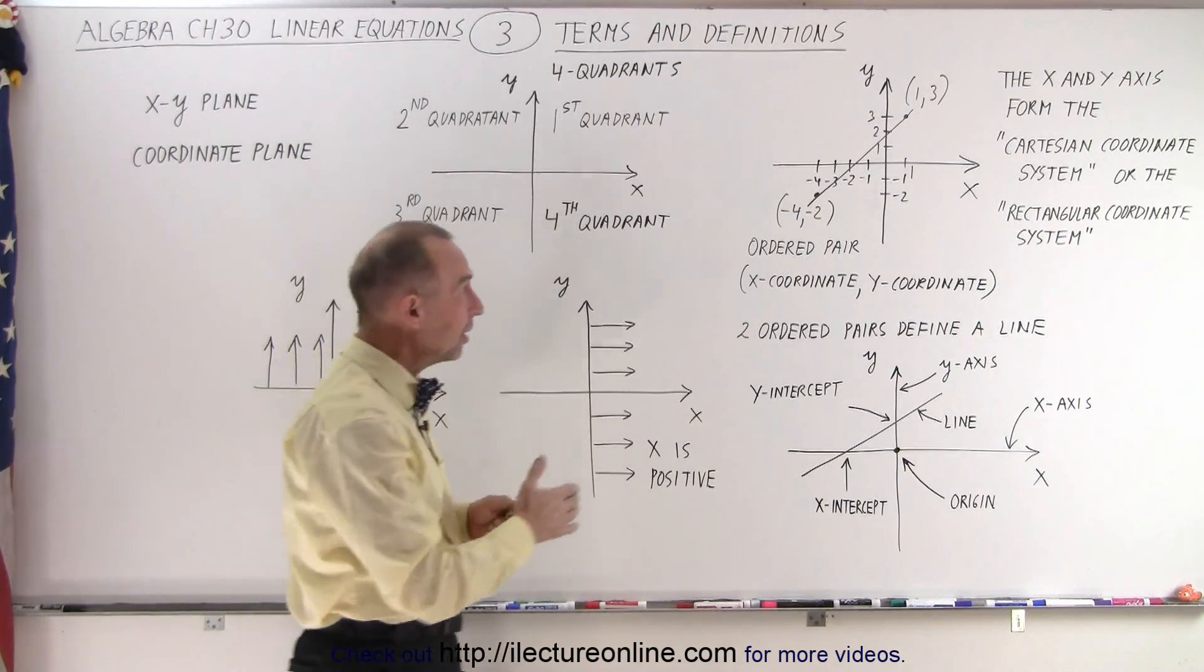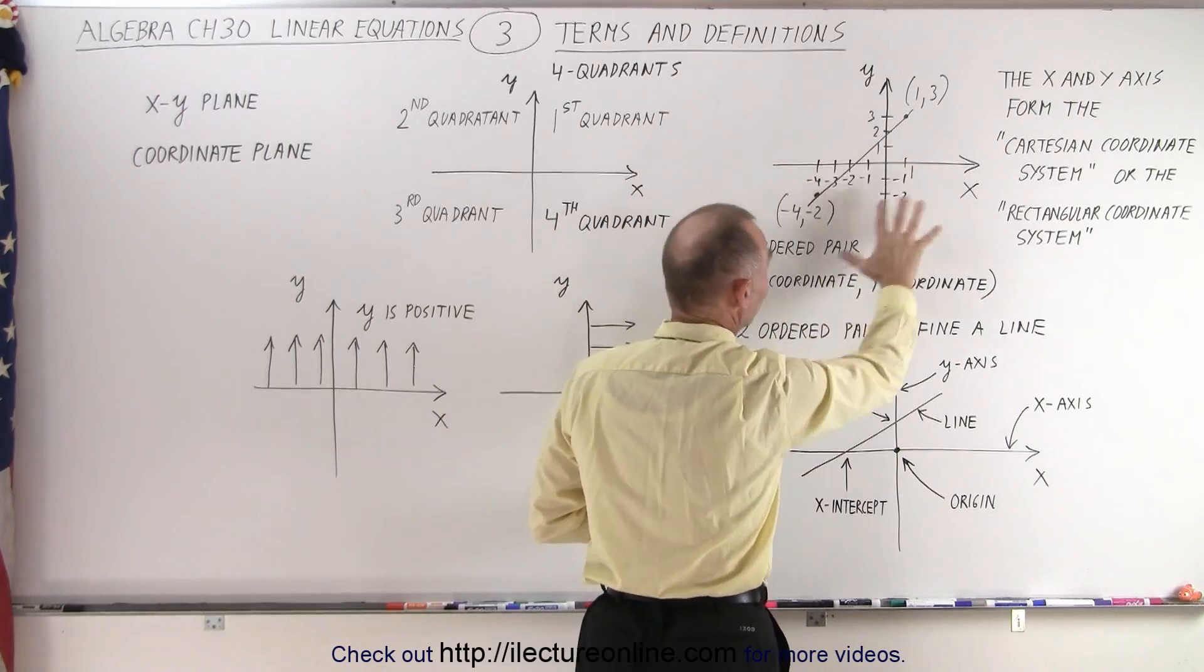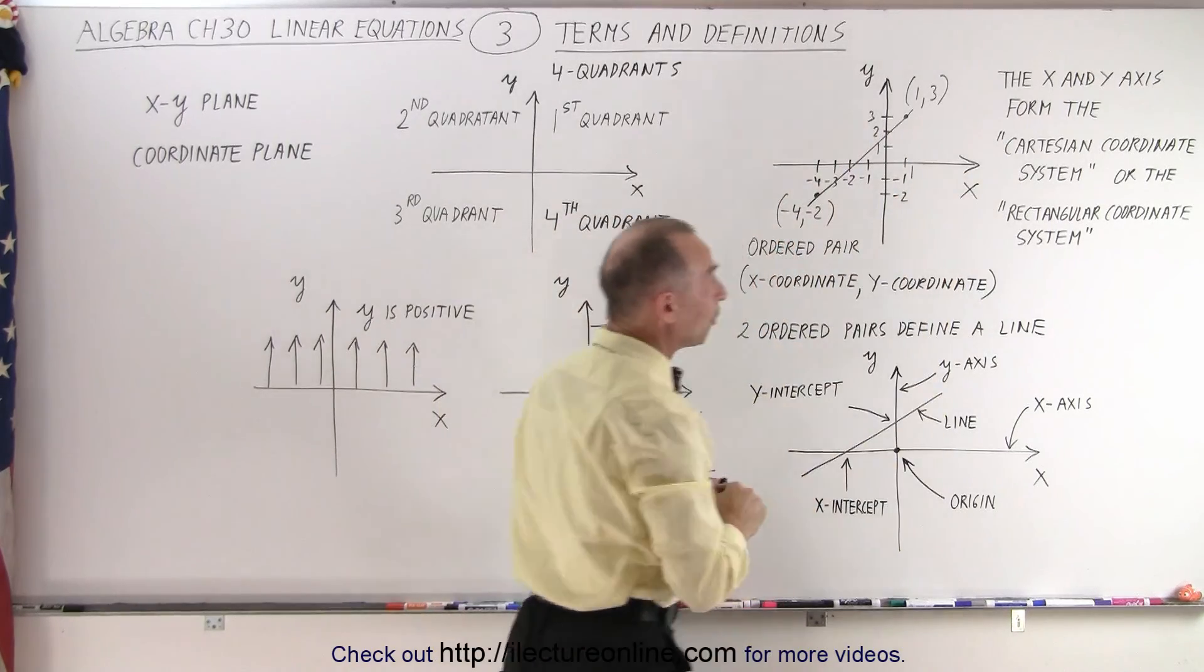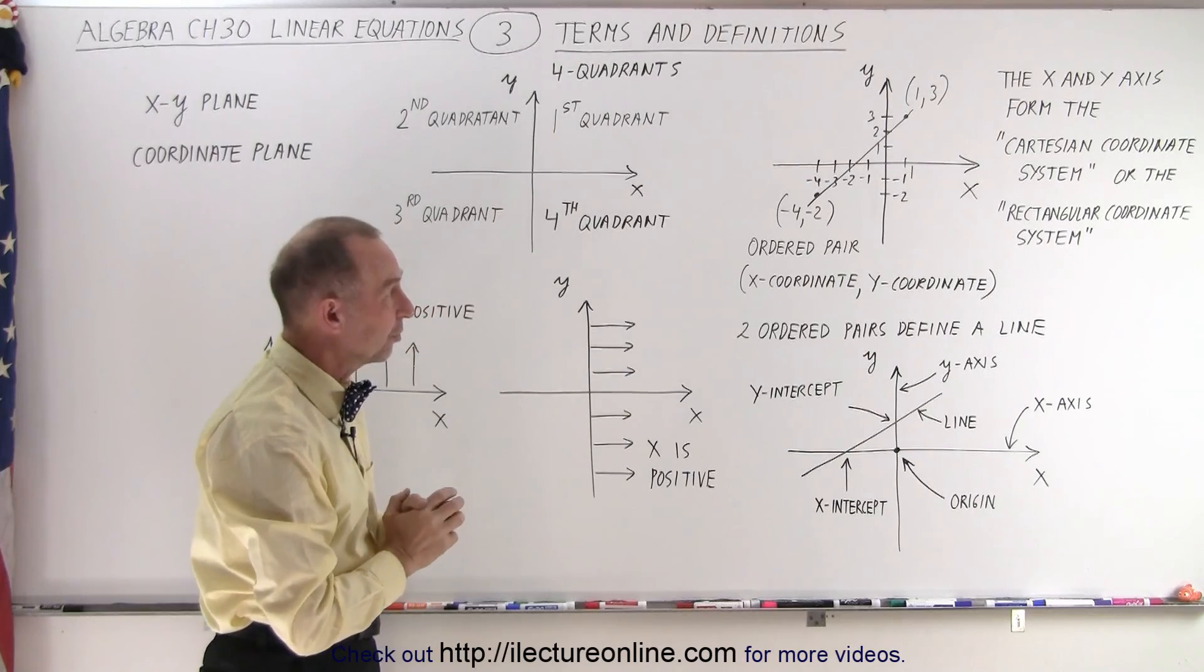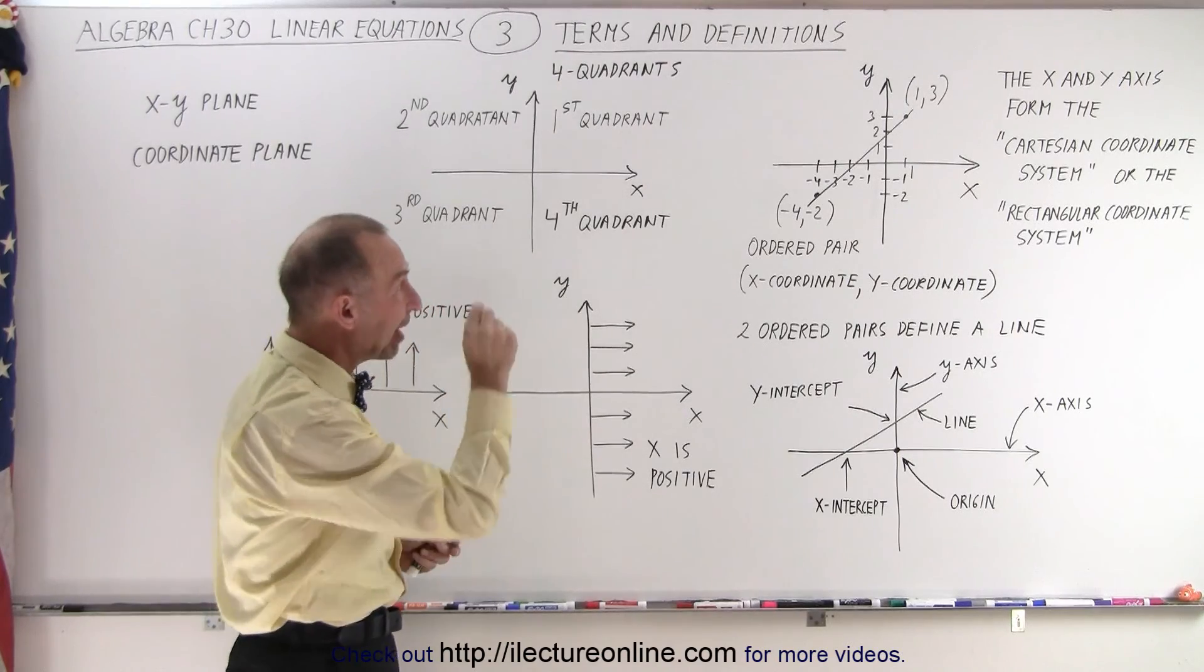Whenever we draw an x and a y-axis together as a pair, that forms the Cartesian coordinate system or the rectangular coordinate system. And on it we can identify points.